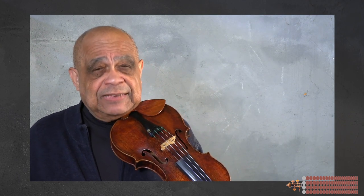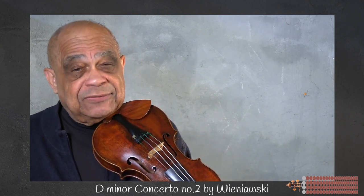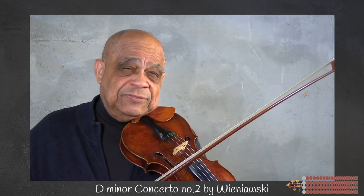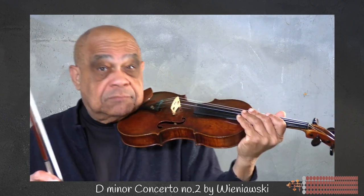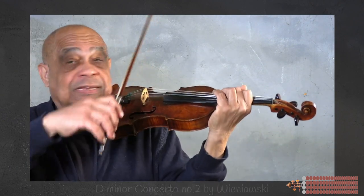So let's look at this section of the D minor concerto by Wieniawski. It starts at measure 115 of the first movement. Here, it's this one.